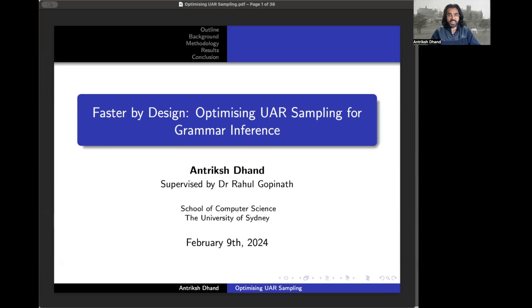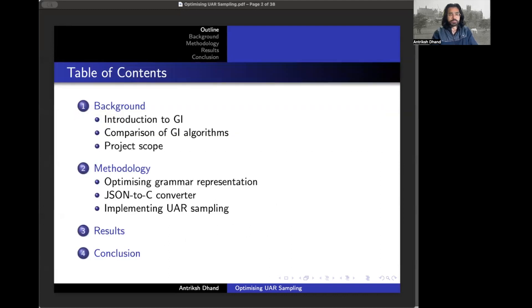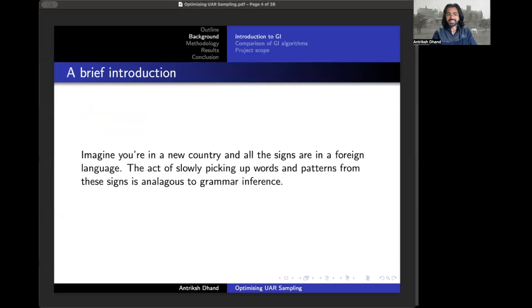Hey everyone, I'm Antrish and today I'll be walking you through my summer research project, which is all about optimizing uniform at random sampling for grammar inference. We're going to start off with a bit of background on the field of grammar inference and what our project was all about. We'll then walk through the actual work that we did over the summer and finally we'll conclude with our major findings.